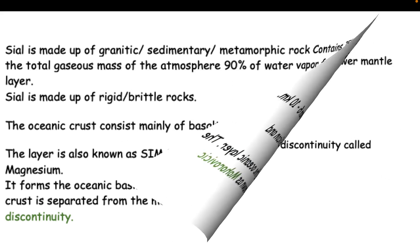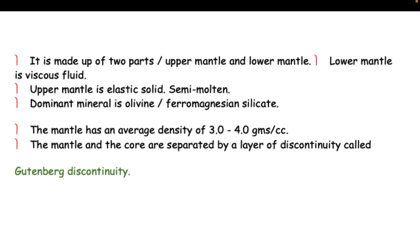Composition of the mantle: It is made up of two parts, upper mantle and lower mantle. Lower mantle is viscous fluid. Upper mantle is elastic solid semi-molten. Dominant mineral is olivine ferromagnesian silicate. The mantle has an average density of 3.0 to 4.0 grams per cc. The mantle and the core are separated by a layer of discontinuity called Gutenberg discontinuity.